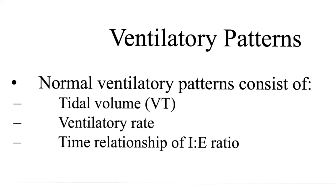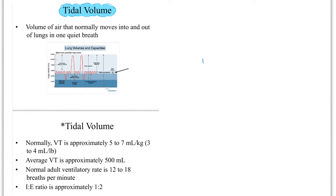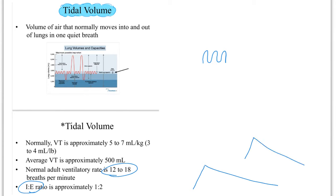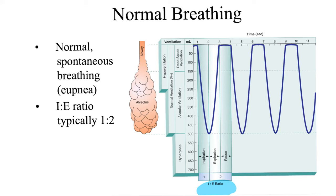Ventilatory patterns include tidal volume, ventilatory rate, and the inspiration-to-expiration ratio. Tidal volume is the volume during normal quiet breathing — usually 500 mL. Respiratory rate is normally 12–18 breaths per minute. Expiration is normally longer, giving an I:E ratio of 1:2. Normal breathing is called eupnea. Faster than normal: tachypnea. Slower: bradypnea. Deeper: hyperpnea. Deeper and faster: hyperventilation.